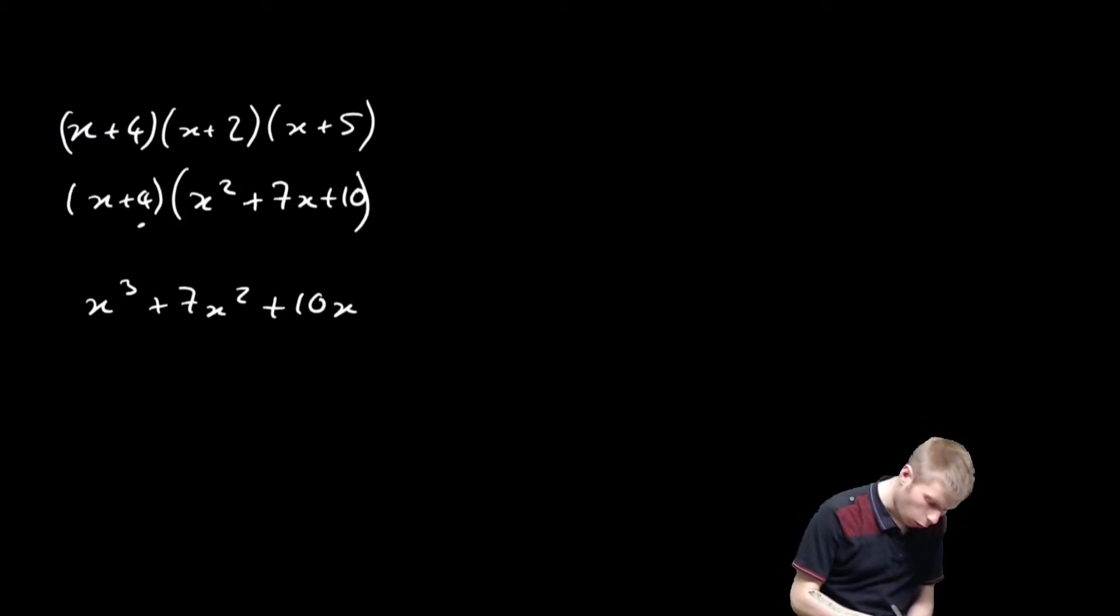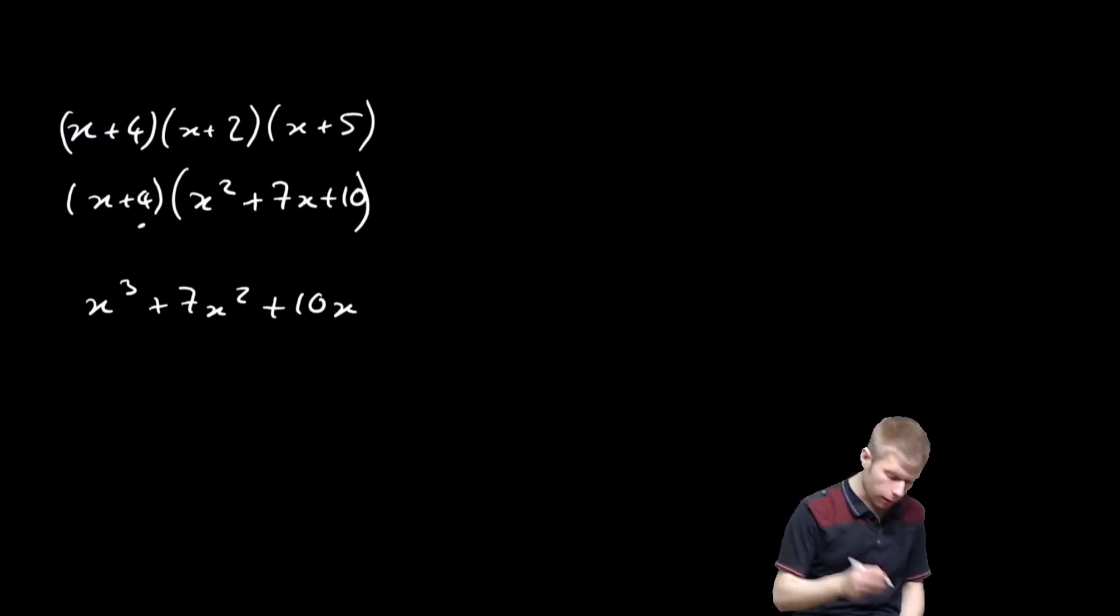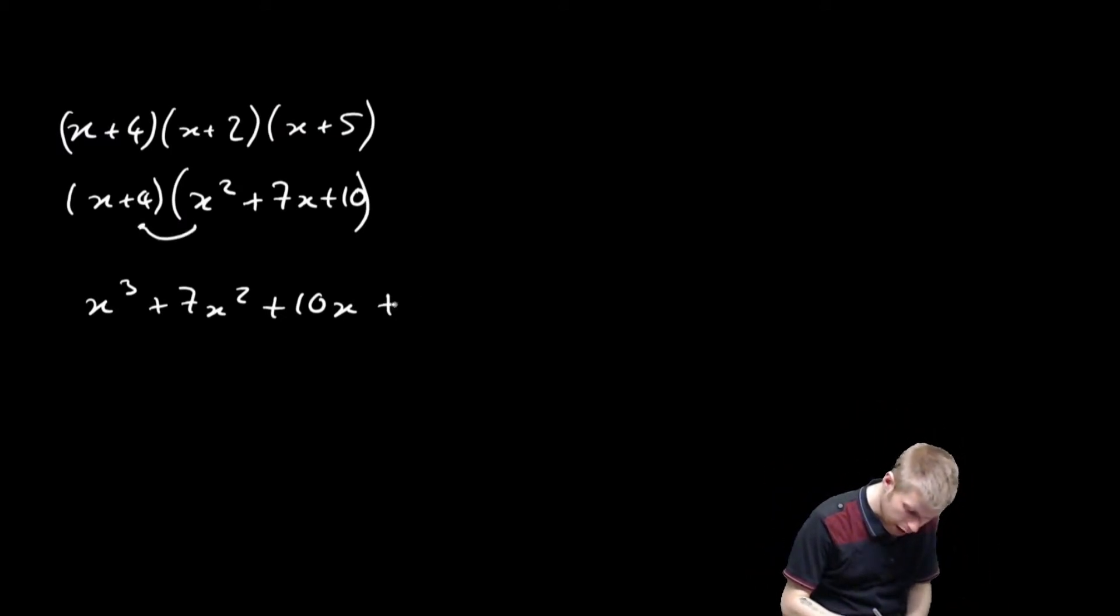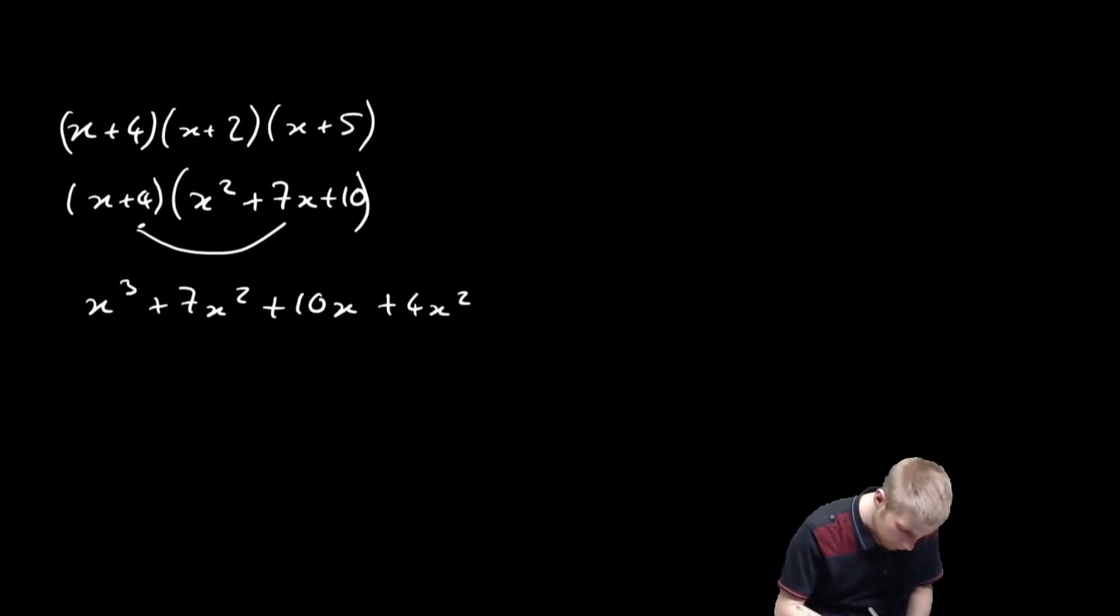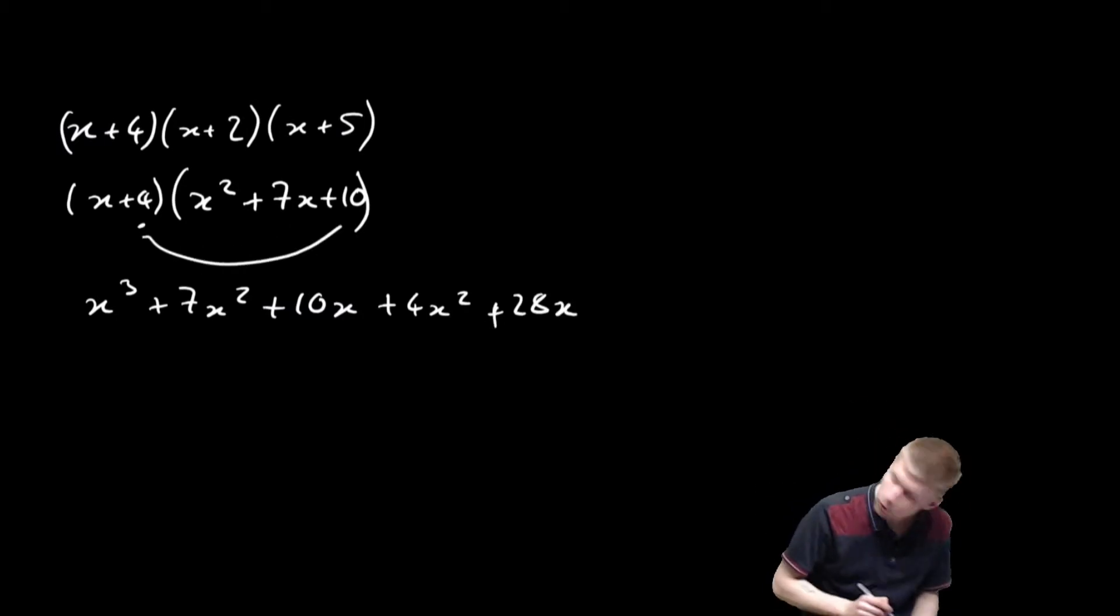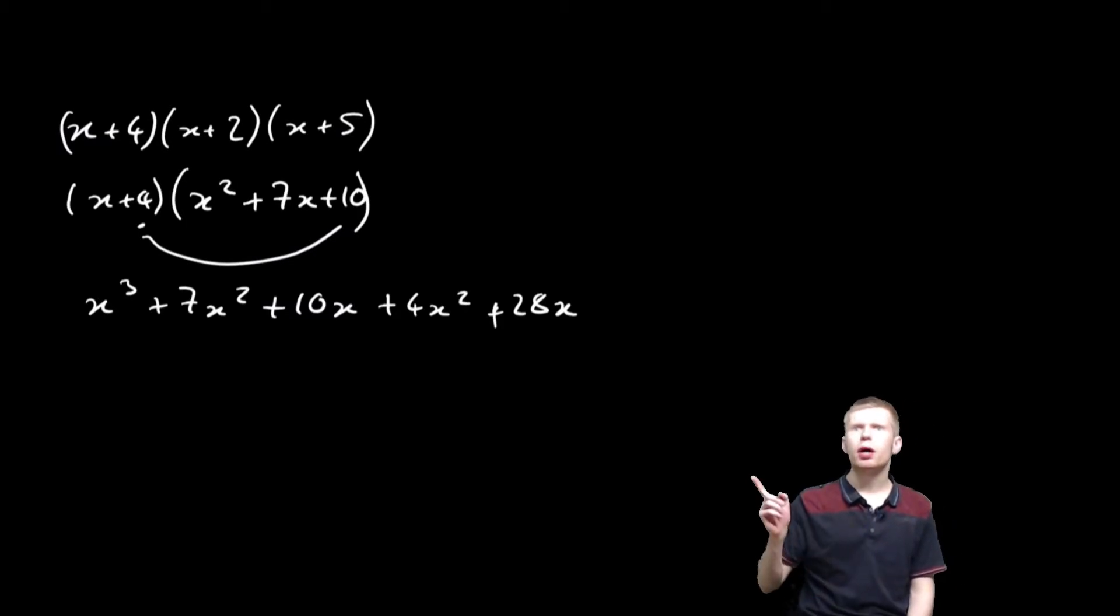Now I'm going to work with the 4. So 4 multiplied by x² is going to give me 4x². And then I'm going to do 4 multiplied by 7x. That's going to give me 28x. And then I'm going to do 4 multiplied by 10. That's going to give me 40.